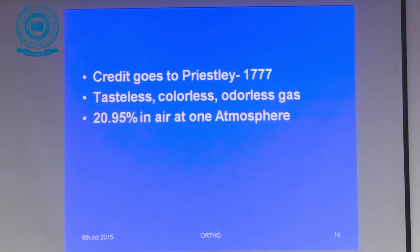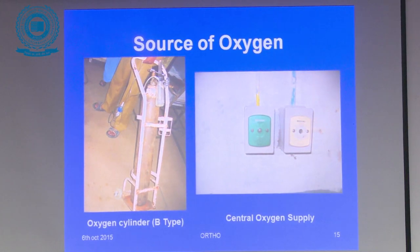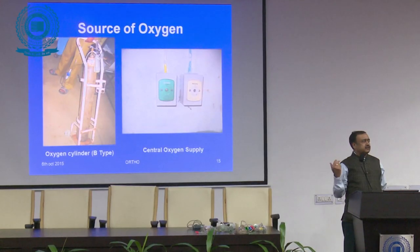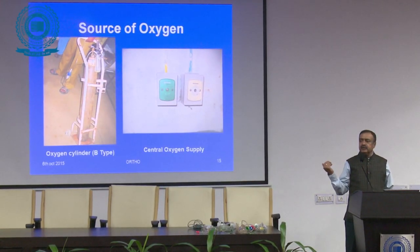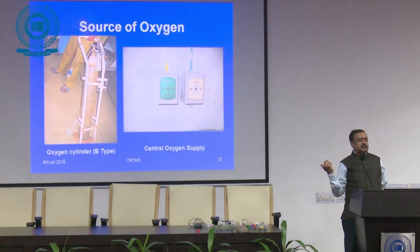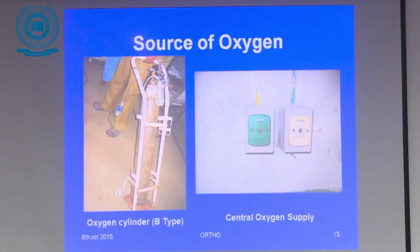Oxygen is a colorless gas. Commercially, it is available in hospitals and nursing homes in two forms: the central oxygen supply pipeline system, and the B-type cylinder which we usually carry around the hospital.